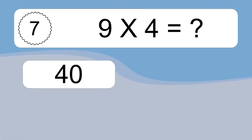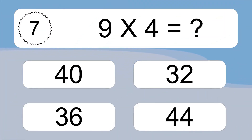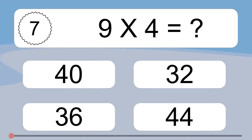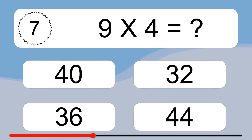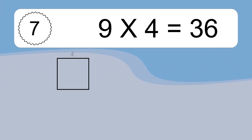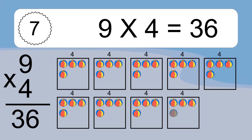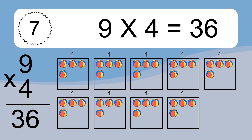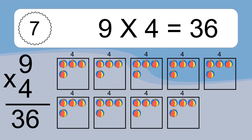9 times 4 equals what? 9 times 4 equals 36. We have 9 boxes, and each box has 4 colorful balls inside. If you count all the balls in all the boxes together, you will have 9 times 4 balls. This equals 36 balls.